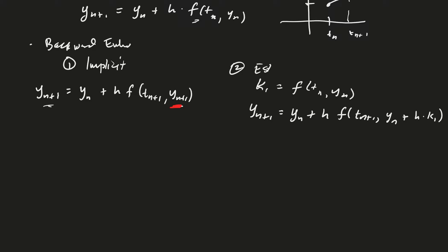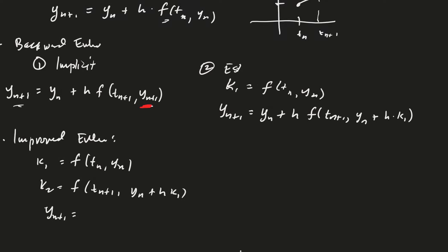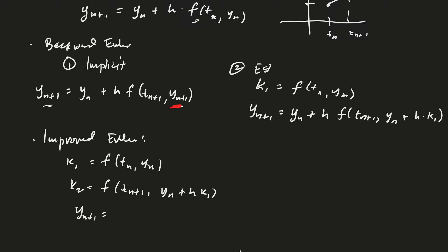The last one is improved Euler. We evaluate at a couple different places: k1 is the first evaluation at (tn, yn), k2 is at (tn+1, yn + h*k1), and then yn+1 uses the average of k1 and k2, times h.